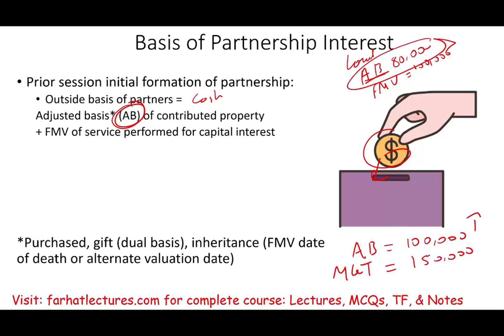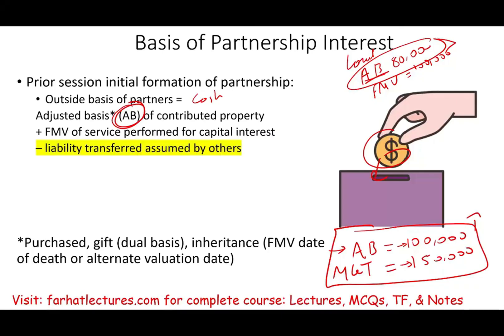If you take my house, which has an adjusted basis of $100,000, you might think it's free — but it's not, because with the house comes the mortgage. It's as if you paid me $50,000, because I gave you $100,000 in property but relieved myself of $150,000 in debt. So you actually paid me $50,000. Whenever you contribute debt, it reduces your basis.